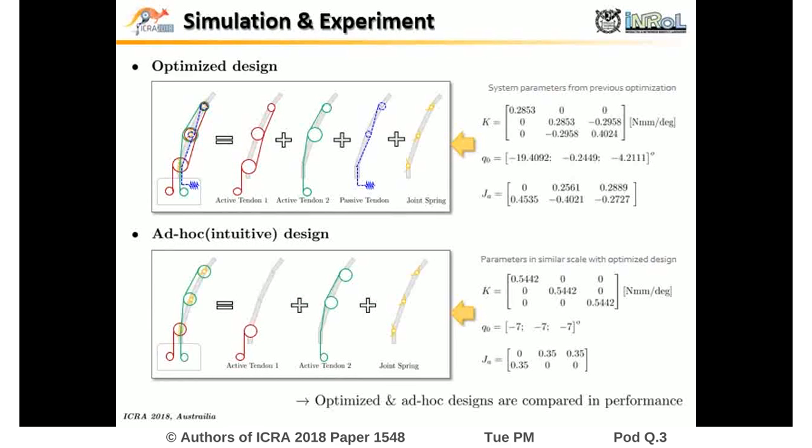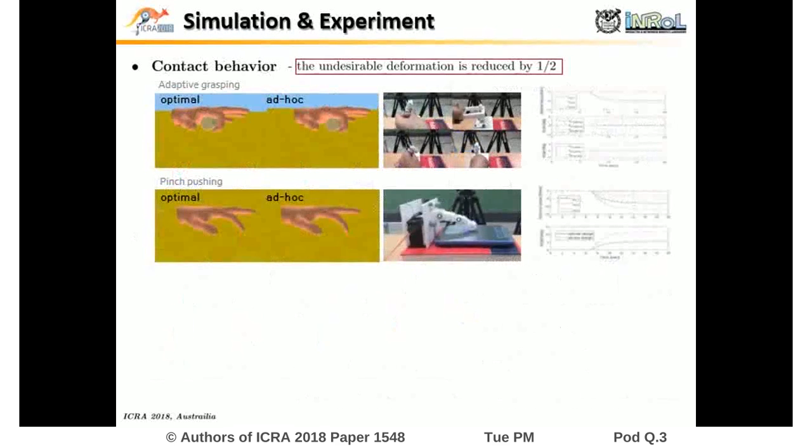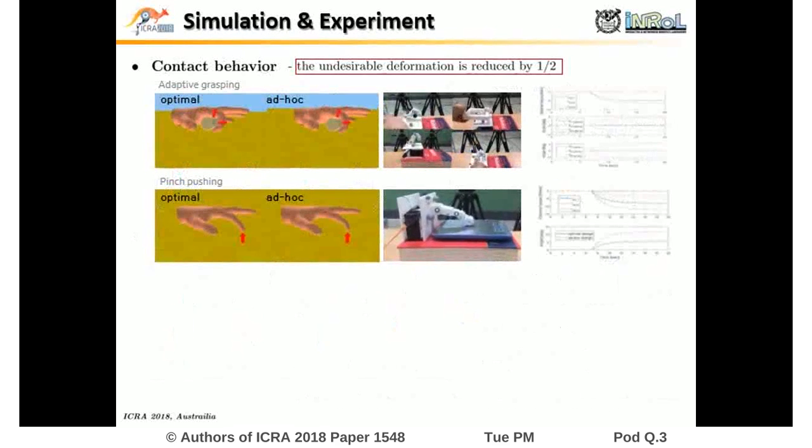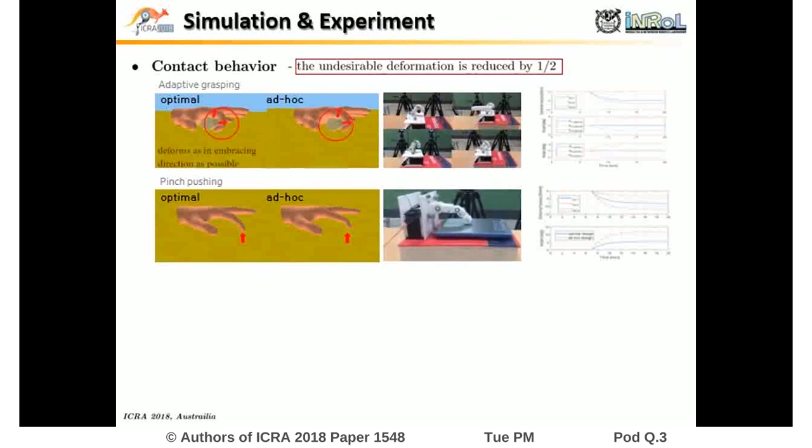We compare the performance of these with an ad-hoc design. We can see that when external wrench is acted on the robot, the undesirable deformation in unactuated space is reduced by half, even if the scale of spring constant remains the same.